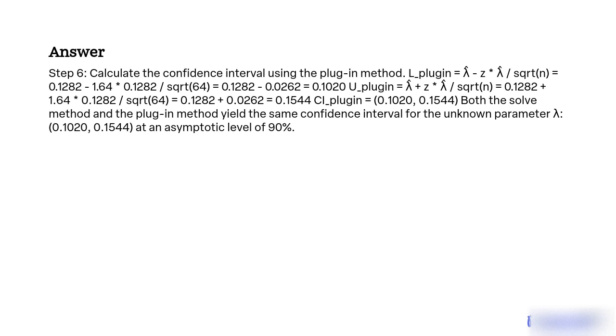U_plugin = λ̂ + z × λ̂/sqrt(n) = 0.1282 + 1.64 × 0.1282/sqrt(64) = 0.1282 + 0.0262 = 0.1544.